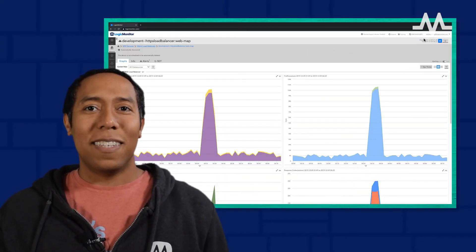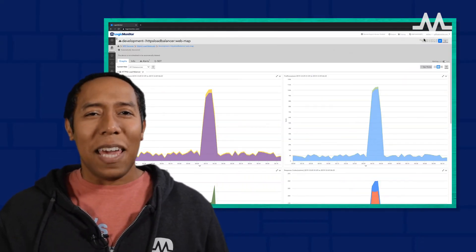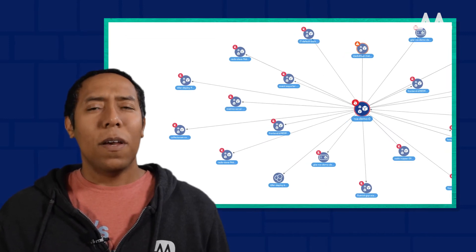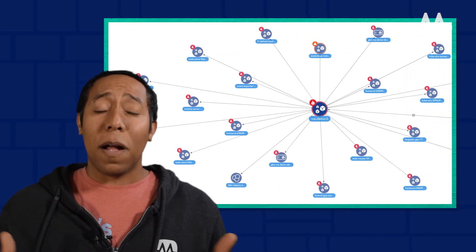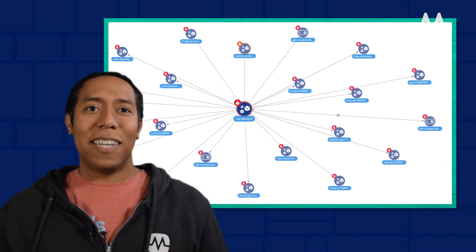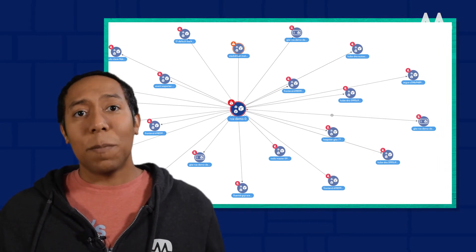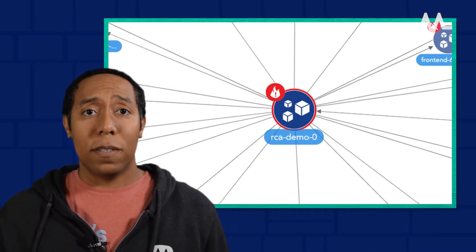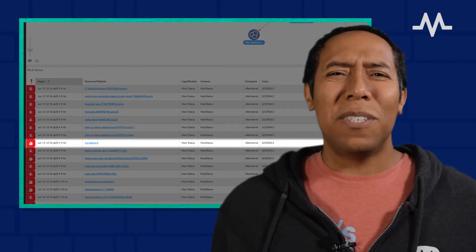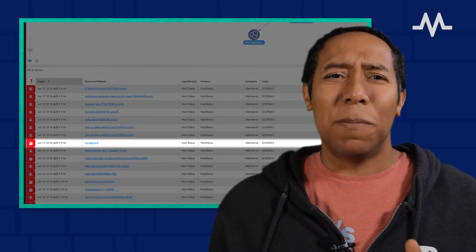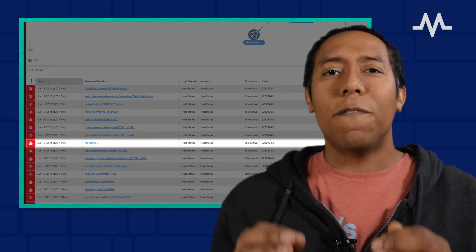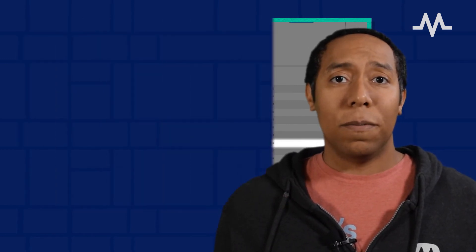Automated root cause analysis is another key part of an AIOps early warning system. Root cause analysis relies on topology map relationships to determine the root cause of an incident that is impacting dependent resources. With root cause analysis, teams are able to ignore issues related to dependent resources and focus on solving for the root cause of the issue.